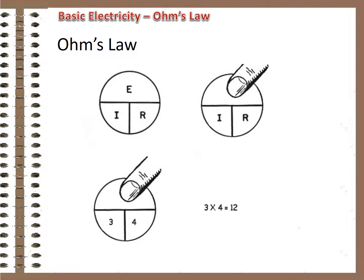How about voltage? Cover the E. The vertical line tells us to multiply current times the resistance. If we knew our circuit had 3 amps of current and 4 ohms of resistance, Ohm's Law tells us that there is a 12 volt source.